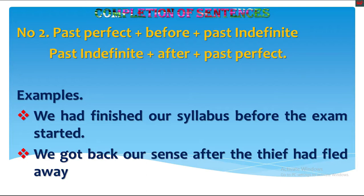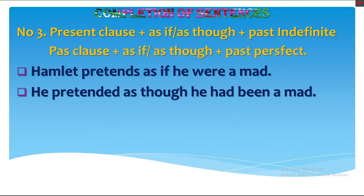Rule number 3: A present clause plus 'as if' or 'as though' is followed by a past indefinite. A past clause plus 'as if' or 'as though' is followed by a past perfect. Examples: 'Hamlet pretends as if he were a man.' Second: 'He pretended as though he had been a man.' You can see the use of sequence of tense in these two examples.